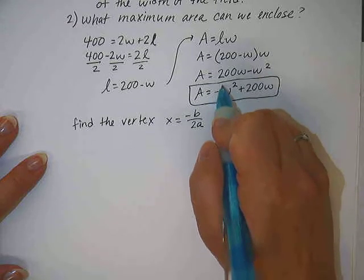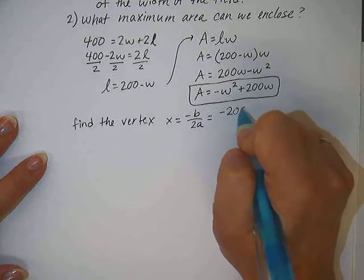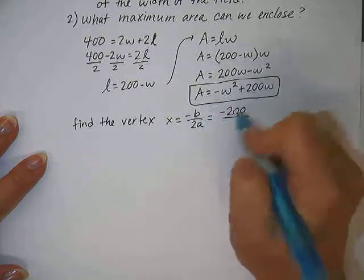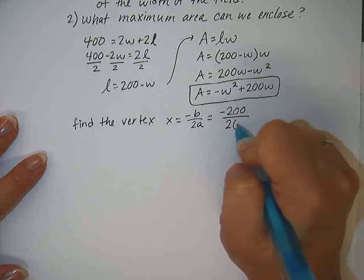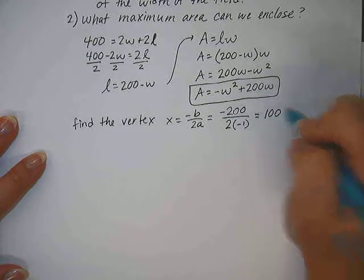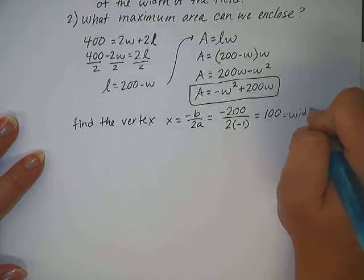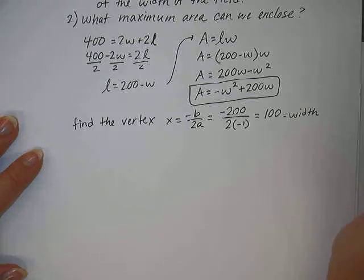Okay, so here in our quadratic, the 200 is our B value, and a negative 1, there's an invisible 1 there, is the A value. So I'm going to plug those in, negative, plug in the 200, over 2 times negative 1. That means that the maximum area can be enclosed when the width equals 100.